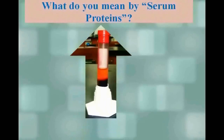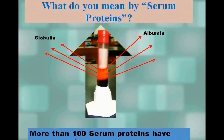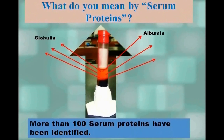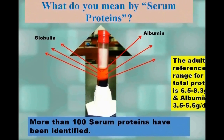What do you mean by serum proteins? It refers to a large, heterogeneous collection of individual proteins. More than 100 serum proteins have been identified. Serum is the most frequently analyzed specimen for total protein or protein fractions.